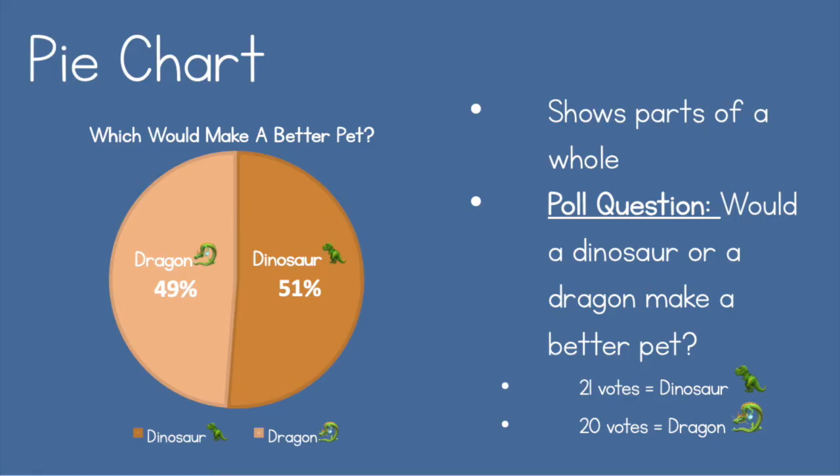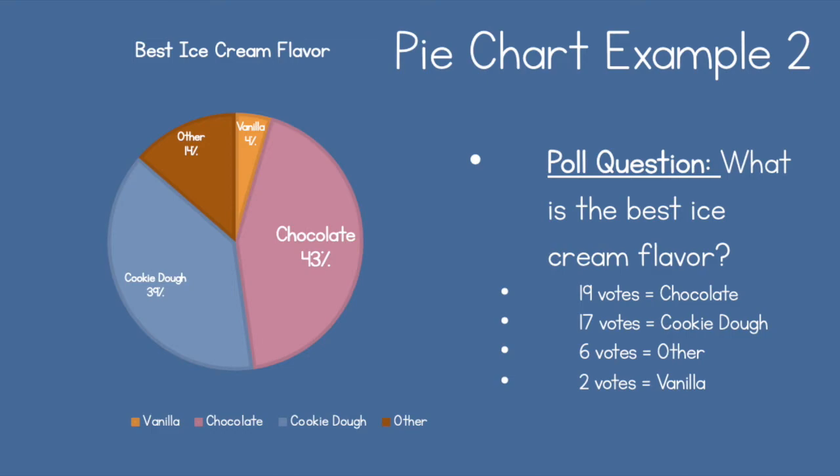What can we learn by looking at this graph? A very similar amount of people think both dragons and dinosaurs could make a good pet. Why did I choose a pie chart? I was choosing between just two options, and I thought you would really be able to see in a circle just how much each won by. The results being so even was a great fit — you can see just how close they were, nearly half and half, with only one more vote for dinosaurs.